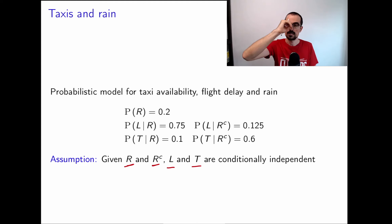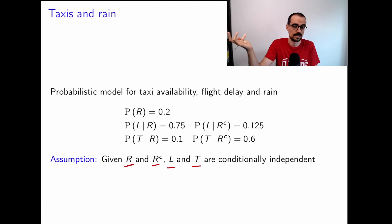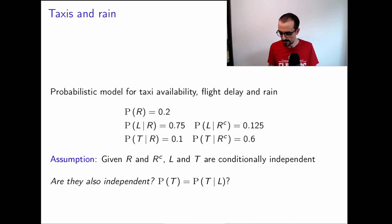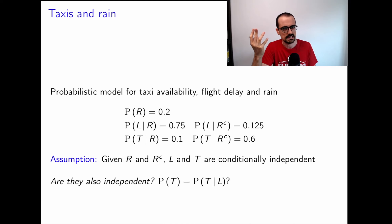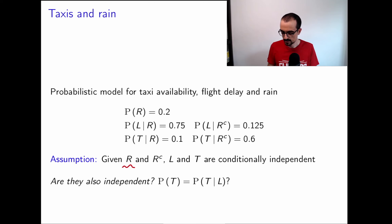We assume that given rain (or given no rain), L (late) and T (taxis) are conditionally independent. If it's raining, the flight being late has nothing to do with whether there are taxis at the airport — there's no causal connection between them. So this is quite intuitive. But the question is: under all these conditions, are taxis and late actually independent? There's this other quantity R (rain) that connects both, as we'll see.